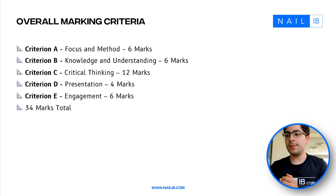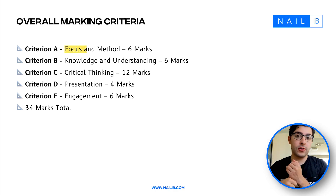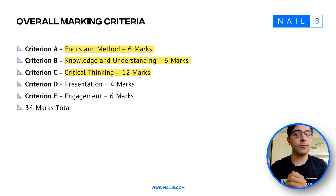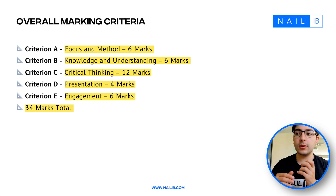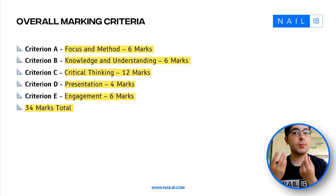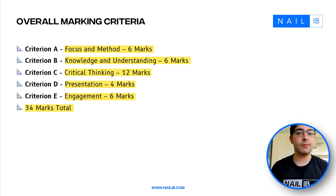Hi everyone. In this video I'm going to be covering the EE marking criteria. I'm going to deconstruct each part of it and examine how that can be applied to a mathematics EE. The overall marking criteria has five sections: focus and method worth six marks, knowledge and understanding worth six marks, critical thinking worth 12, presentation worth four, and engagement worth six — a 34 mark total. Criteria A to D will mostly come from the essay, and criterion E will mostly come from the reflections.